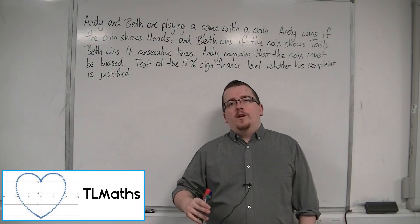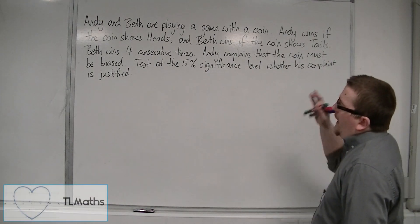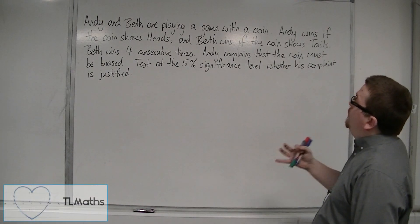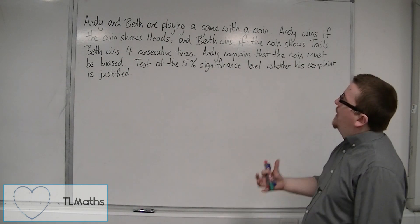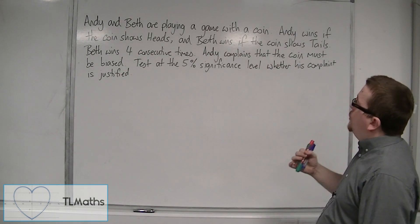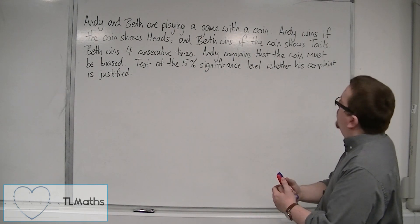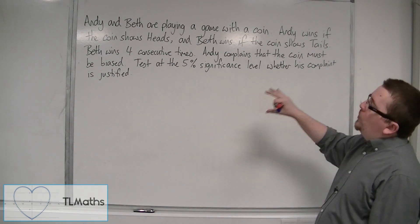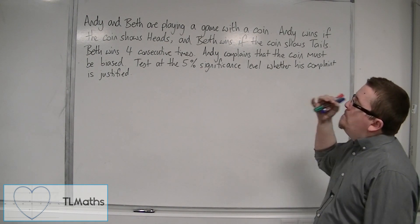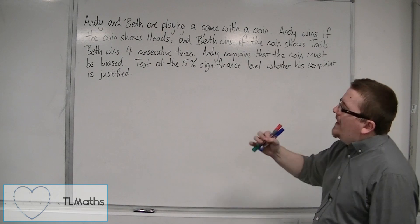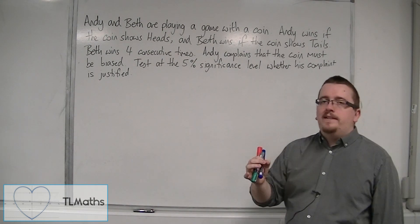So let's look at a particular problem. Andy and Beth are playing a game with a coin. Andy wins if the coin shows heads, and Beth wins if the coin shows tails. Beth wins four consecutive times. Andy complains that the coin must be biased. Test at the 5% significance level whether his complaint is justified.